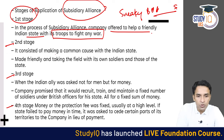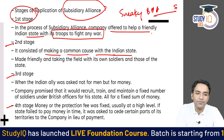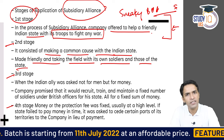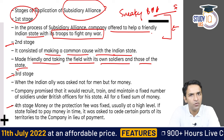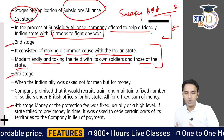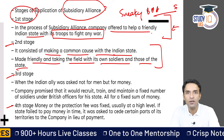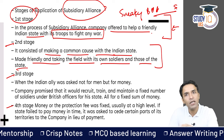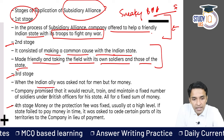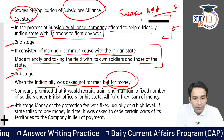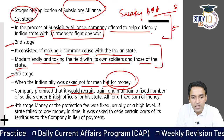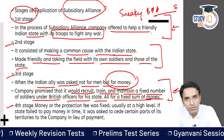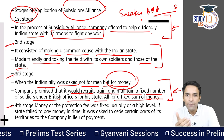The second stage consisted of making common cause with the Indian state — taking the field with both British soldiers and soldiers of that state. For example, when the Nizam of Hyderabad had problems with Mysore state, the Britishers supported the Nizam from behind: 'take our support, we have a common enemy, let's fight together.' The third stage: the Indian ally was asked not for men but for money. The Company promised it would recruit, train and maintain a fixed number of soldiers under British officers for the state, for a fixed sum of money.